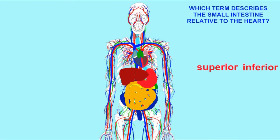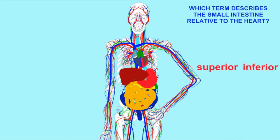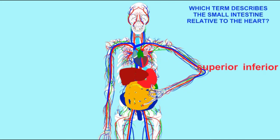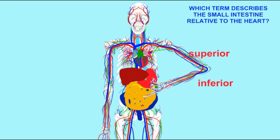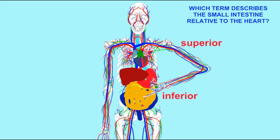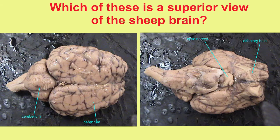In the same way, when considering the small intestine relative to the heart, the small intestine is inferior to the heart and the heart would then be superior to the small intestine. But these are not absolute — the heart is inferior to the head and the small intestine is superior to the knee. So you'd have to specify in the question: the small intestine is inferior to the heart.